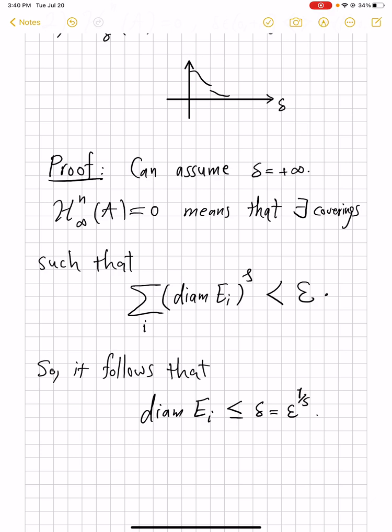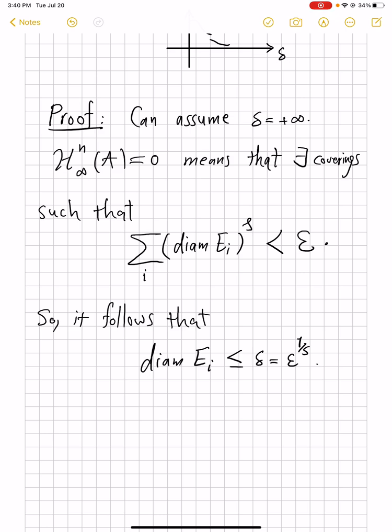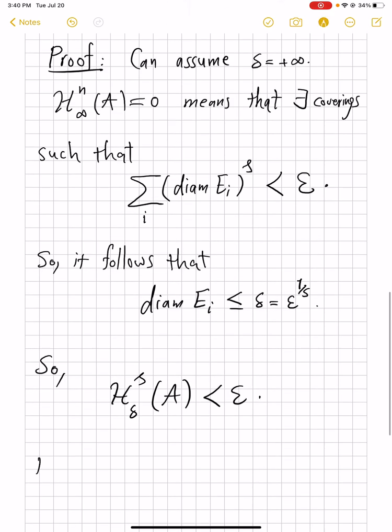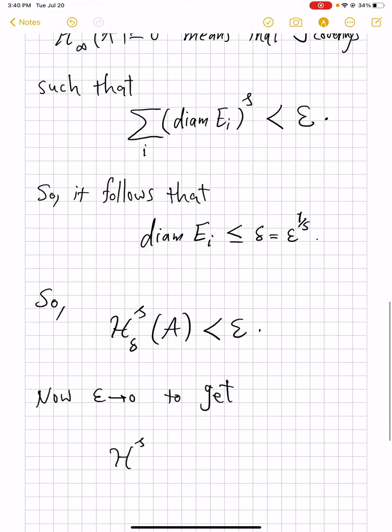So, even though we did not begin by any assumption on the diameters, it automatically follows that the diameters are indeed quite small, ε being small, and then you take a positive power of that. So, because these coverings E_i form a δ covering, we can see that H^s_δ with this δ of A is also less than ε. We just write the same summation as above. Now, let the ε go to zero to get that H^s of A is zero.